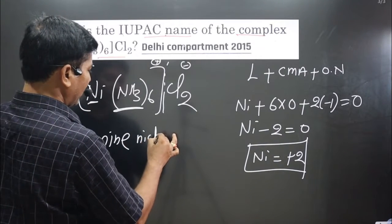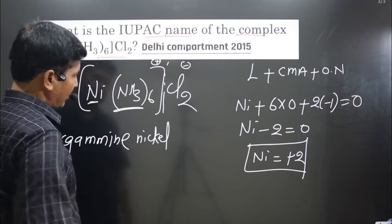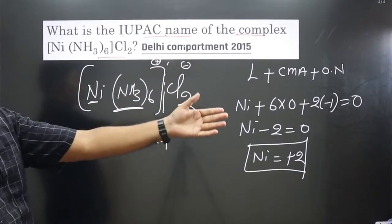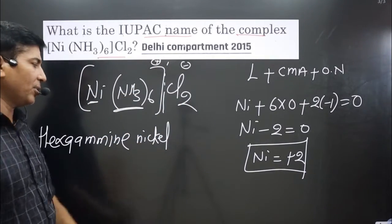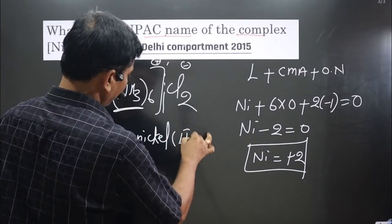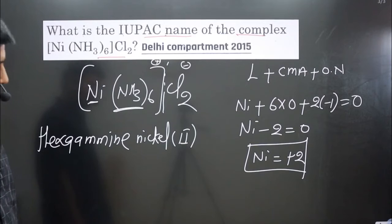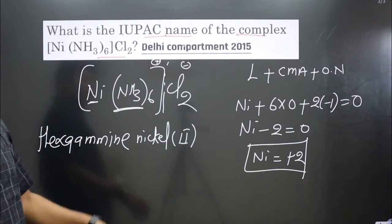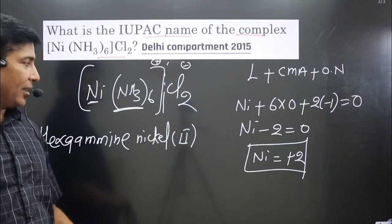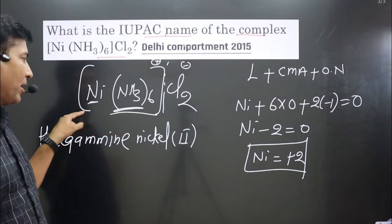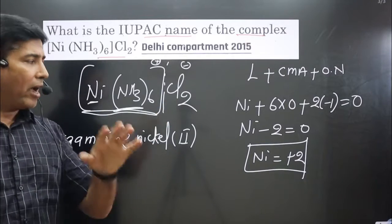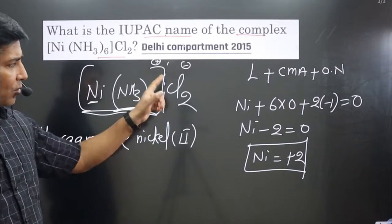After writing the ligands, we write the central metal atom. Since nickel is in a cationic complex, we use its common name: nickel. Then we write the oxidation number already calculated, which is (II) in Roman numerals. Next comes the interesting part — writing the counter ion.